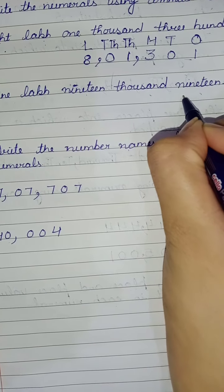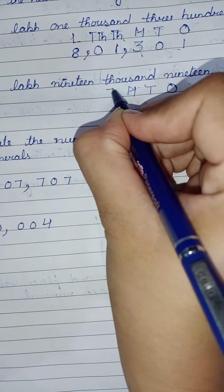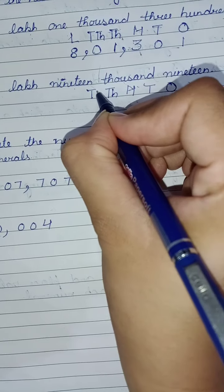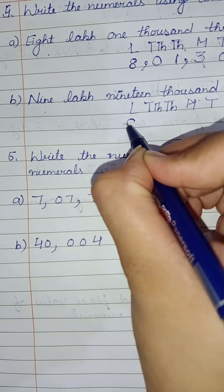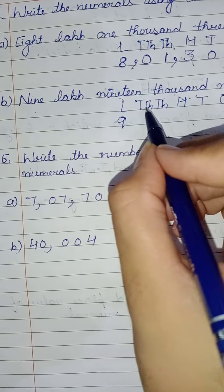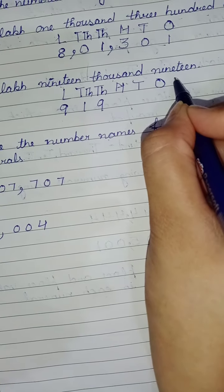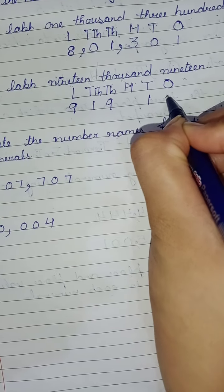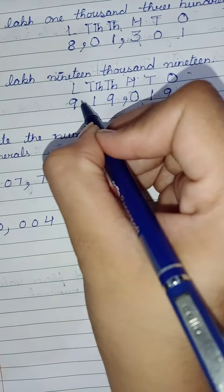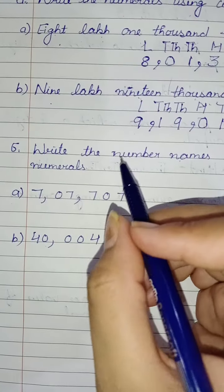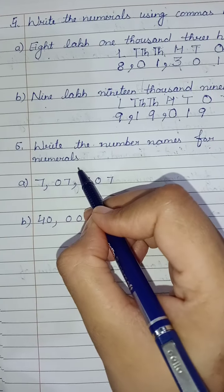Next question is nine lakh nineteen thousand nineteen. This also goes up to lakhs, so start: ones, tens, hundreds, thousands, ten thousands, and lakhs. Lakh has nine, so write 9 here. Nineteen thousand means both thousand and ten thousand have 1 and 9, so nineteen in that family. Then nineteen - that's 1, 9 because hundreds family has no members. Now insert commas: one comma here and here.